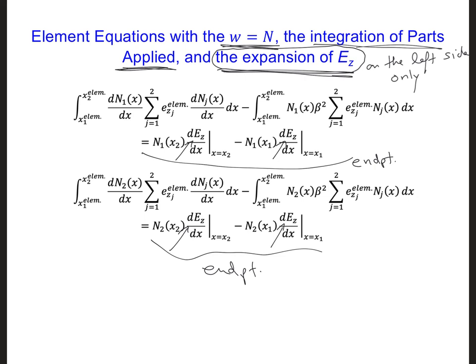So for now, let's just see if we can simplify the right side of these equations though, these endpoint terms. Is there a way that we can simplify these equations? Consider the linear interpolation functions that we've chosen for n1 and n2. Do you see how we can simplify the right-hand sides of these equations, these endpoint terms?